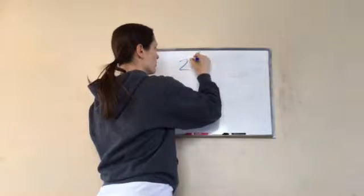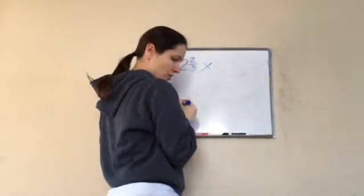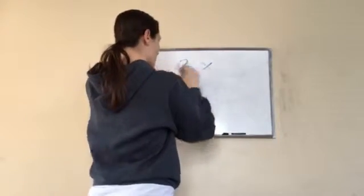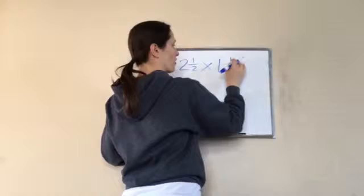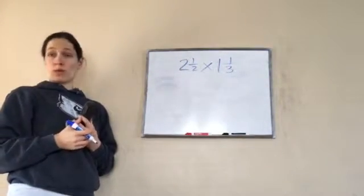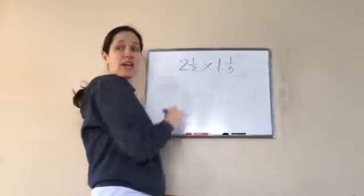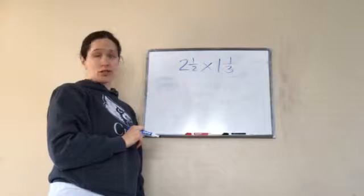Two and two-thirds times, let's do this first. Two and a half times one and one-third. Do we need to change the denominators? We are going to, when you are multiplying, you do not have to have common denominators. Only on adding and subtracting fractions.